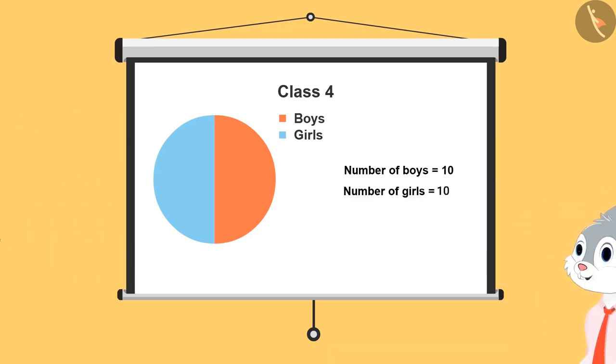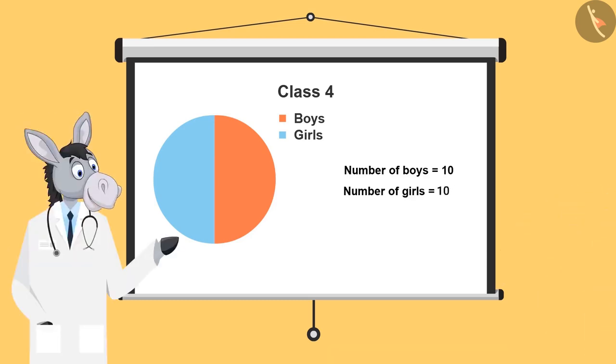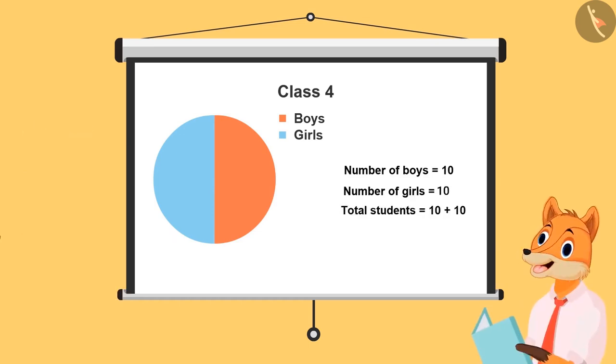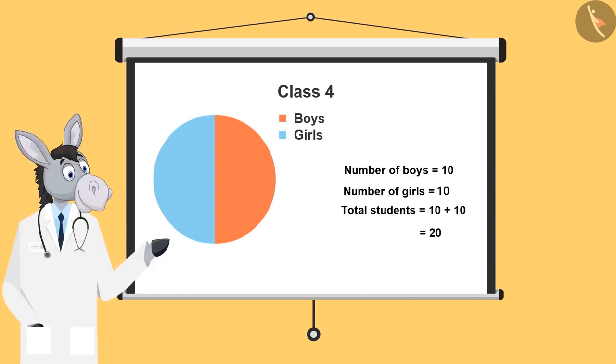10. Right. So, what is the total number of students in the class? 10 and 10, it's 20. Very good.